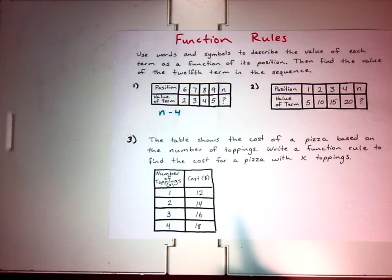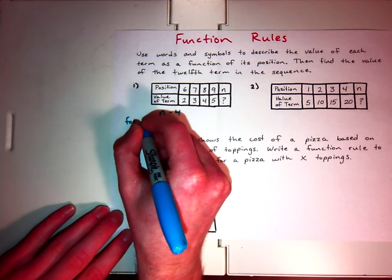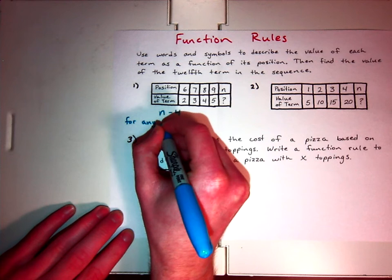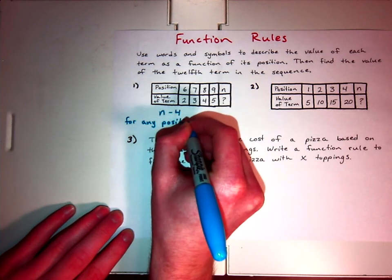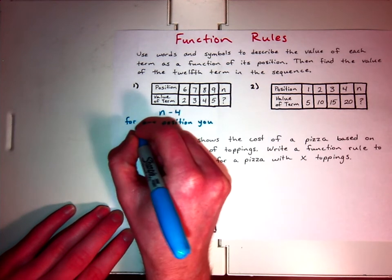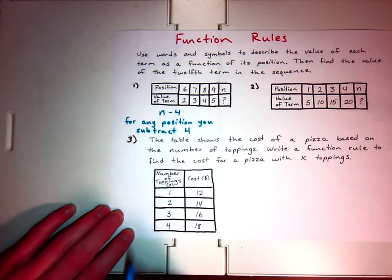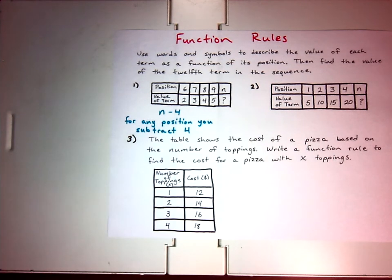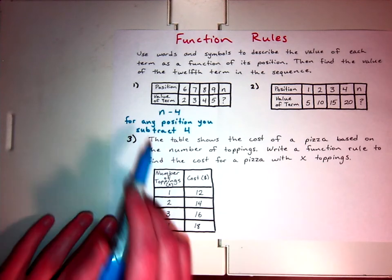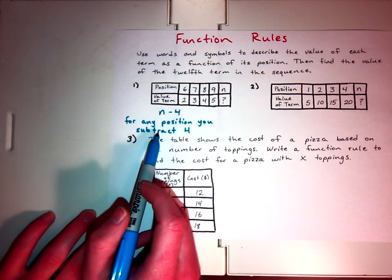Now, how would we write that in words? In words, you might say, for any position, you subtract four. Because any position we choose, that's what you're going to do. It's going to be consistent. So here we've used numbers and symbols. Here we've used words.